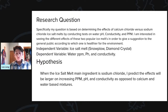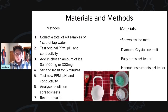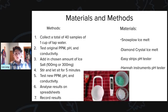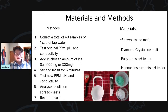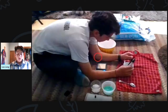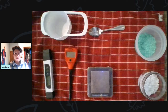So the independent variable is parts per million, pH, and conductivity. The methods I used: first I collected a total of 40 samples of one cup of tap water. I then tested the original parts per million, pH, and conductivity before I added in the salt. Then I added in either 100 milligrams or 300 milligrams of the salt, stirred it, and let it sit for five minutes before testing the new parts per million, pH, and conductivity. I then analyzed and recorded the results on Google Sheets. My materials were Snowplow ice melt, Diamond Crystal ice melt, easy strips pH tester, and a Hanna Instruments pH tester. Here's a picture of me conducting the experiment in my house and here's a picture of all the materials I used.